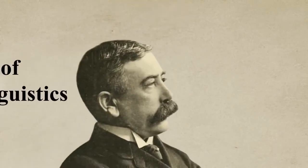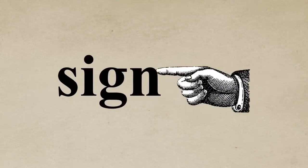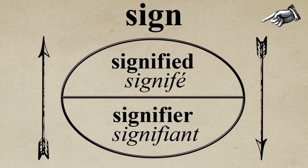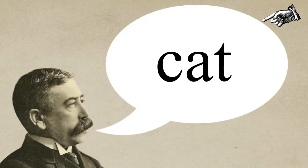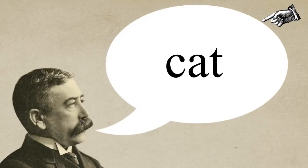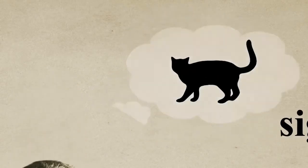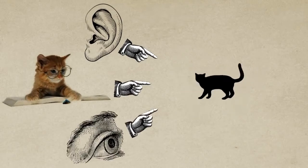In order to begin to understand structural linguistics, we first need to understand the key ideas. First, there's the sign. Saussure's sign consists of the signifier and the signified. The signifier is the sounds or the letters used to denote what we're talking about. The signified is the actual concept of the thing — that is, the idea in our minds when we hear or read the signifier.